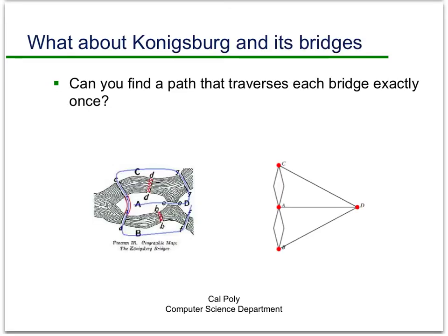So now we have everything we need to know to determine whether there's a solution to the Königigsberg bridge problem. Take a couple seconds and think about it. Try to pick a starting point, say vertex D, and go through and think about what happens every time you go through a vertex.